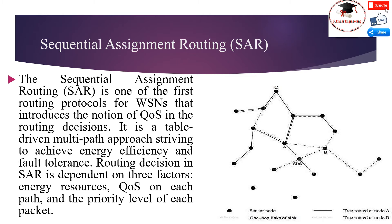A handshake procedure based on a local path restoration scheme between neighboring nodes is used to recover from failures. Failure recovery is done by enforcing routing table consistency between upstream and downstream nodes on each path. At the end of the procedure, most nodes belong to multiple trees. The tree rooted at A and B, two of the one-hop neighbors of the sink, are shown. Node C belongs to both trees and has path lengths of 3 and 5 respectively to the sink.